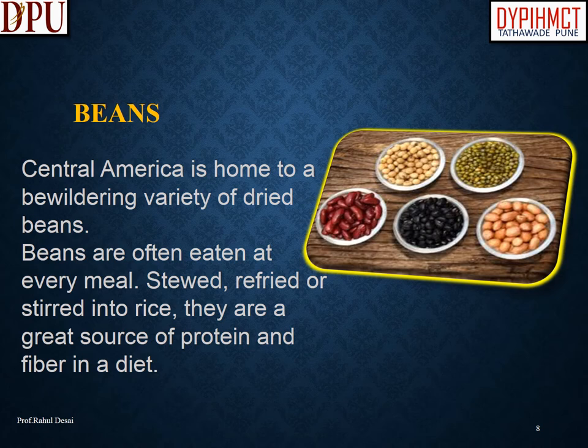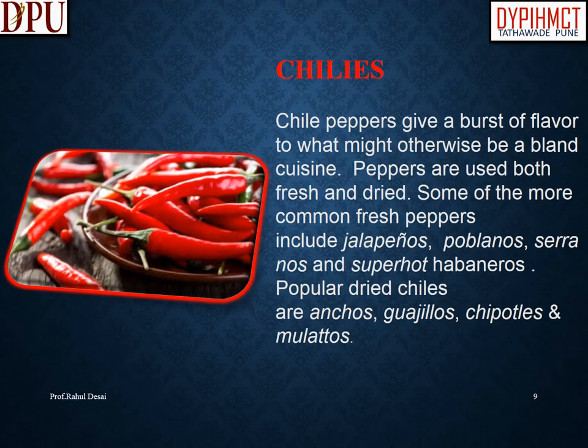Central America is home to a bewildering variety of dried beans, which are often eaten at every meal — stewed, refried, or stirred into rice — serving as a great source of protein and fiber. Chili peppers give a burst of flavor to the cuisine. Common fresh peppers include jalapeños, poblanos, serranos, and super-hot habaneros. Popular dried chilies include anchos, guajillos, chipotles, and mulatos.